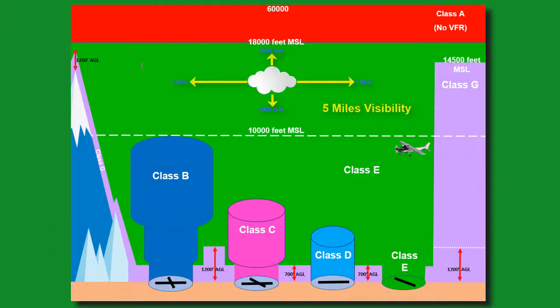Below 10,000 feet, aircraft must operate at 250 knots or less. This is why the distance from clouds requirements is reduced to 1,000 feet above, 500 feet below, and 2,000 feet horizontally with 3 miles visibility.